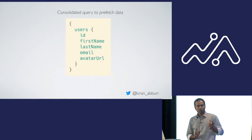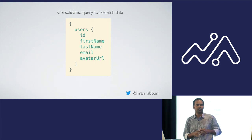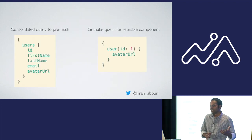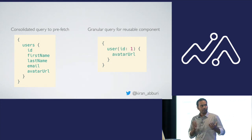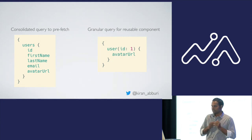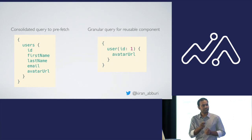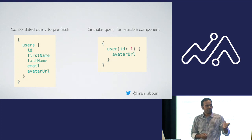For the top-level query, we want to be consolidated rather than granular — fetching all users and all fields required throughout the app. Consolidated queries are good for prefetching; granular queries are good for reusable components. However, there's a problem: when Apollo sees the granular query and encounters the user field, it tries to make a server request even though that data is already in the cache, because the root field names are different — the prefetch query uses 'users' while the component query uses 'user'.